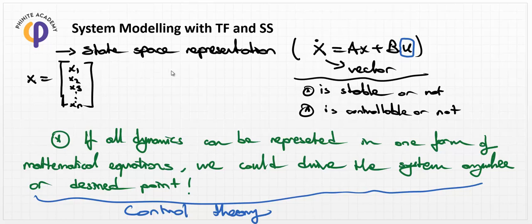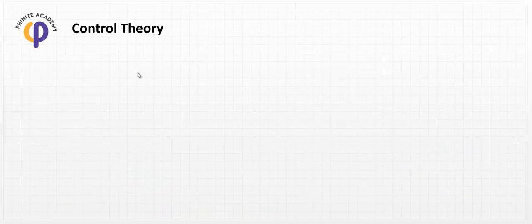We use state space representation in order to create a first-order dynamic of the system because it has an advantage for our usage purpose. In this lesson we need to discuss the properties of control theory, especially in the theoretical and practical aspects.